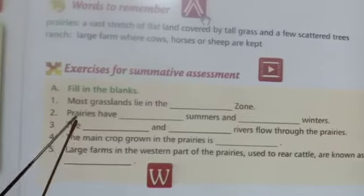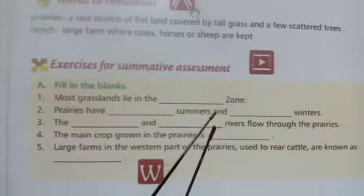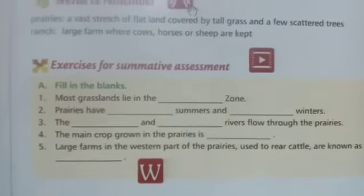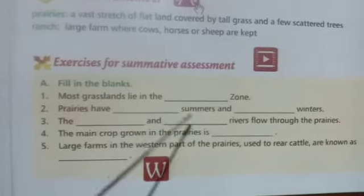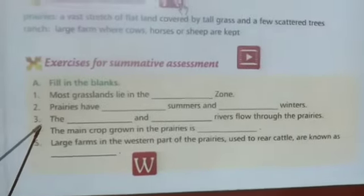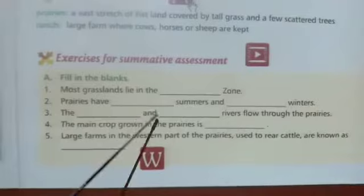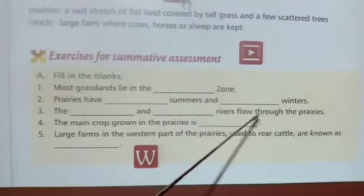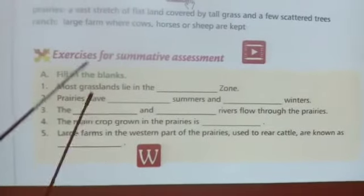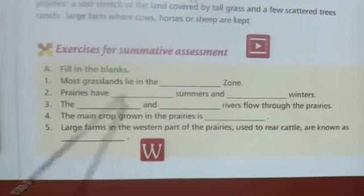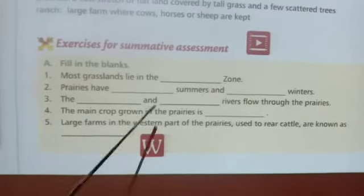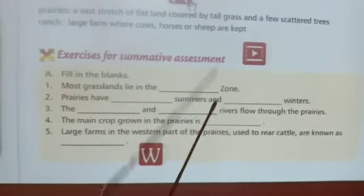Second fill-up: Prairies have — summer and — winter. In our previous video, we discussed: hot summer and cold winter. Third fill-up: the — and — rivers flow through the Prairies. Which are the rivers? Mississippi and Missouri. You have to refer to the previous video.